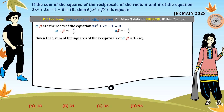It is also given that the sum of the squares of the reciprocals of α and β is 15, so 1/α² + 1/β² = 15. Let's label these as equations 1, 2, and 3.